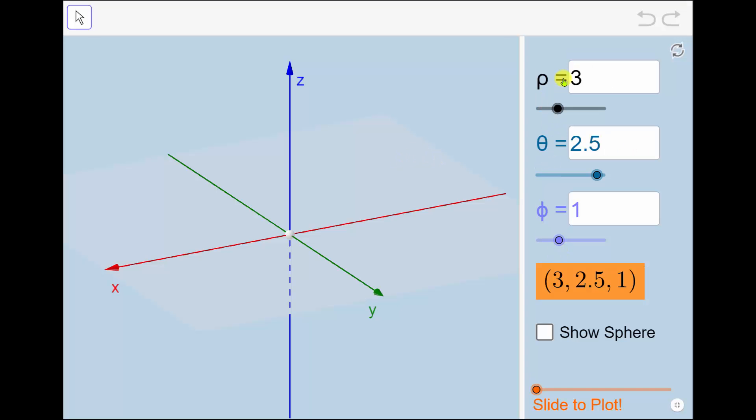So again, rho equals 3 is the distance between the point and the origin. So we can go out along the positive x-axis 3 units. But because rho is the distance from the origin, all the set of points 3 units from the origin would be the sphere shown here. This indicates the point is going to be somewhere on this sphere. Let's also go out 3 units along the z-axis, which we'll use later.